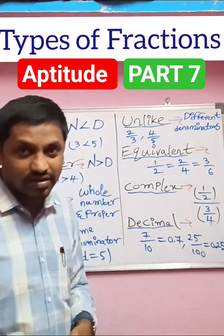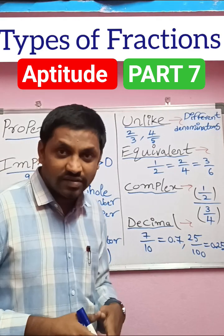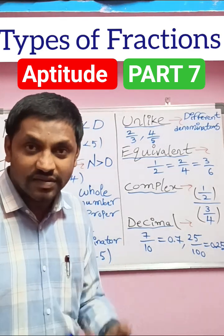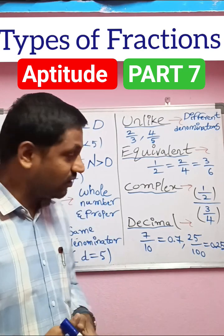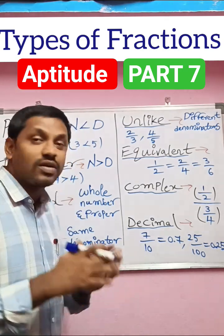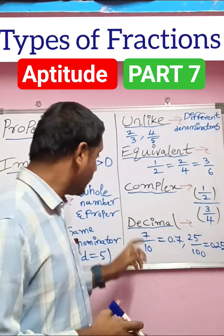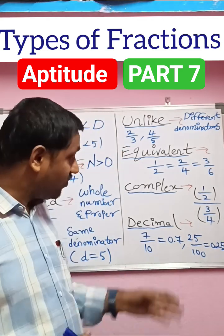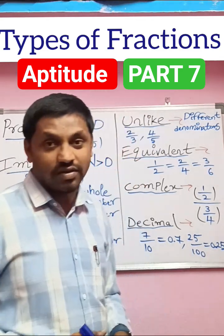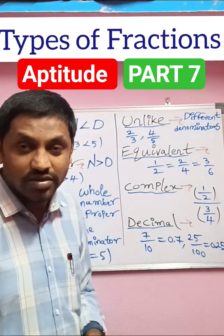One more last, decimal fraction. The fractions with denominators powers of 10: 10, 10 square, 10 cube, like 10, 100, 1000, 10,000, which convert into decimal. For example, 7 by 10 is 0.7, 25 by 100 is 0.25, 1 by 1000 is 0.001.